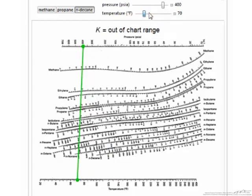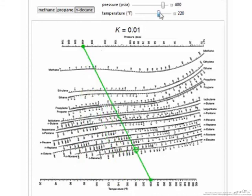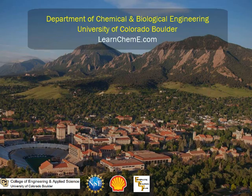K values are useful for performing VLE calculations with hydrocarbons, including determination of the bubble point and dew points for a mixture of materials. K values are also used in flash calculations and multi-component distillation calculations. You should understand how to obtain these values from a DePriester chart.